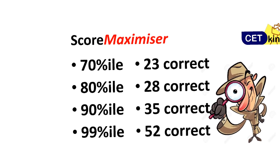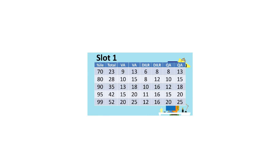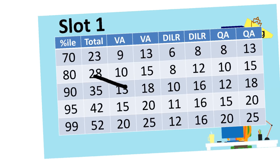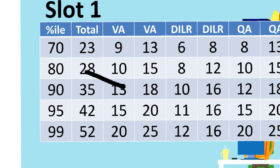In summary, here is what your accuracy should look like: for 70 percentile, 23 correct out of 100 is more than sufficient; for 80 percentile, 28 correct; for 90 percentile, 35 correct; and for 99 percentile, 52 correct. The level of difficulty differed between the two slots this year, so normalization is going to affect your percentile.